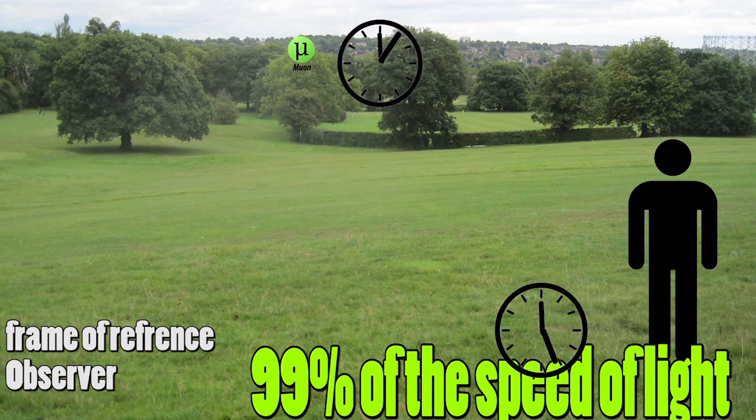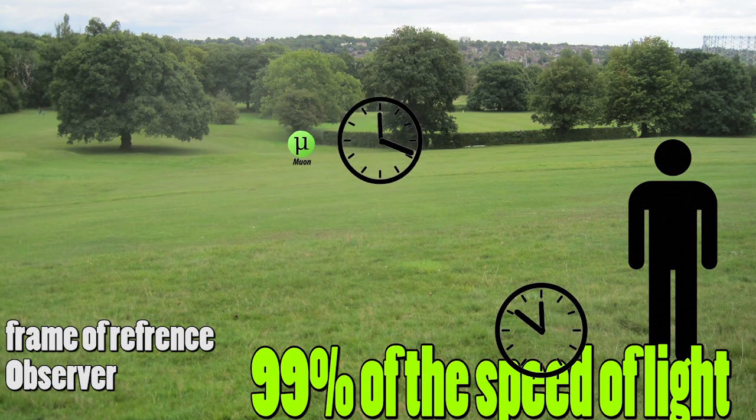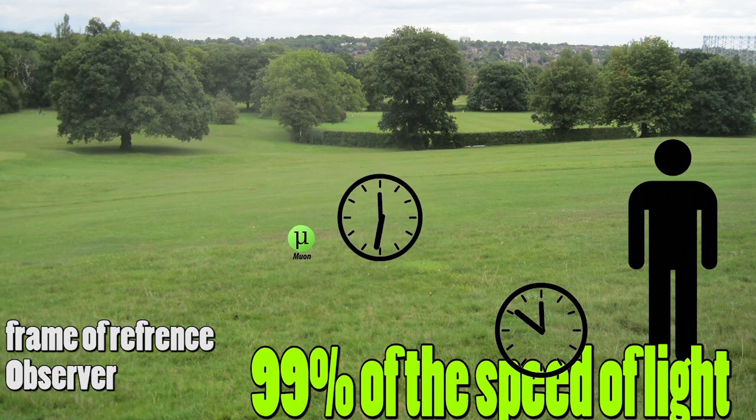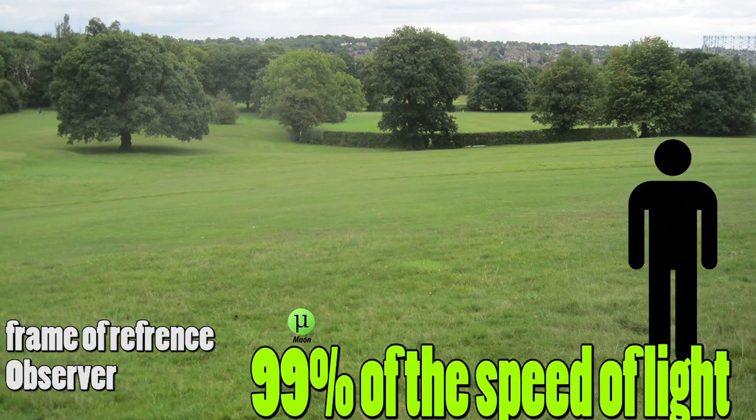In our problem, we, the people on the ground, are the stationary observer. So the muon's clock would tick slower as they are moving at 99% of the speed of light.